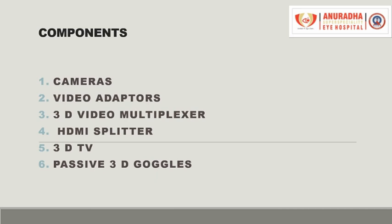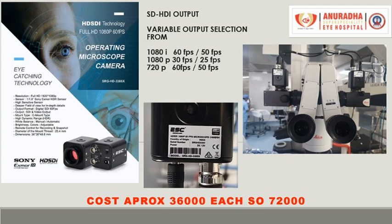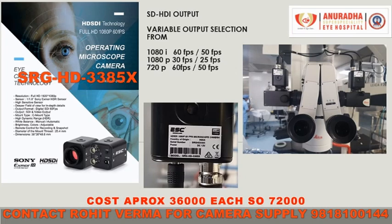In selecting cameras, I would suggest you to select the SRG HD 3385X camera. It has a wonderful facility — it has got SD-HDI output, so you don't need to convert the HDMI signal by means of an HDMI to SDI converter. Its output can be selected from various options like 1080i, 1080p, 720i, 720p, and different frame rates like 50, 60, 25, and 30.